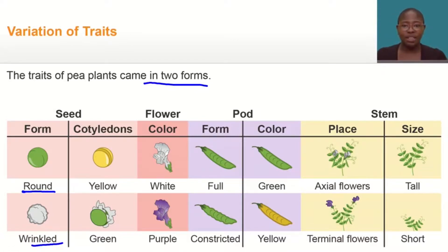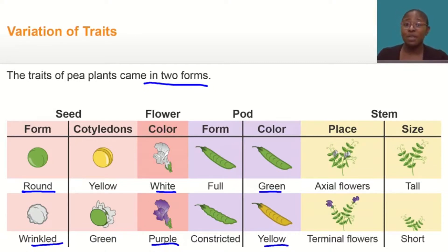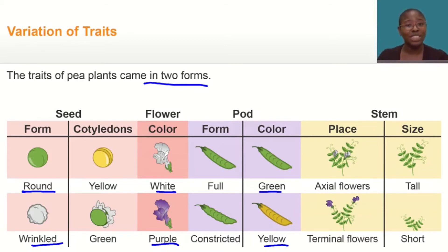Flower color is either white or purple. Pod color can be green or yellow. Mendel was able to focus on these different traits to perform experiments on how traits are passed from one generation to the next.